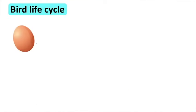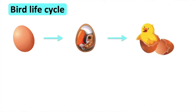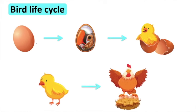For the bird life cycle: first, the bird lays eggs in a nest. The baby bird develops in the egg, and once it has developed, it begins to crack the egg to get out. The chick continues to grow until adulthood. For example, a chicken: the chicken lays an egg, the chick inside begins to grow, and once fully developed, it cracks the egg open and gets out.